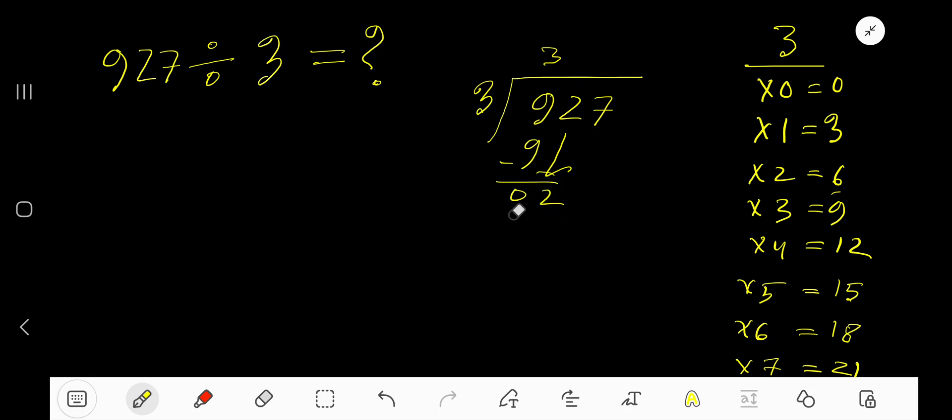Now 3 goes into the current dividend 2 how many times? 0 times, as 2 is less than 3. 0 times 3 is 0. Subtract. Bring down the next digit.